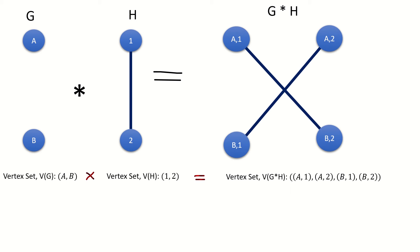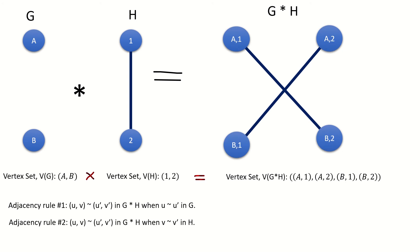How are the vertices in the conormal product connected? They are connected according to two adjacency rules. The first rule: two conormal product graph vertices uv and u'v' are adjacent if their left entries are adjacent vertices in the left graph G. The second adjacency rule: two conormal product graph vertices uv and u'v' are adjacent if their right entries are adjacent vertices in the right graph H.